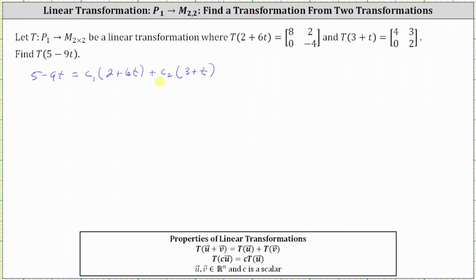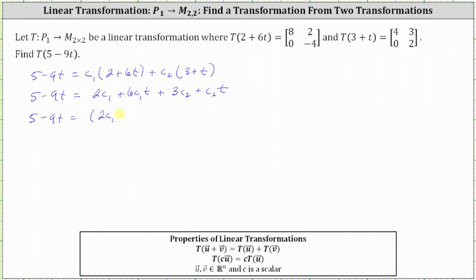We will do this by creating a system of equations by equating the coefficients. We clear the parentheses on the right, which gives us 2C1 plus 6C1T plus 3C2 plus C2T. On the right side we have two constants and two T terms. The constant terms are 2C1 plus 3C2, and the T terms are 6C1T and C2T. Grouping these, the T terms factor to give coefficients 6C1 plus C2.